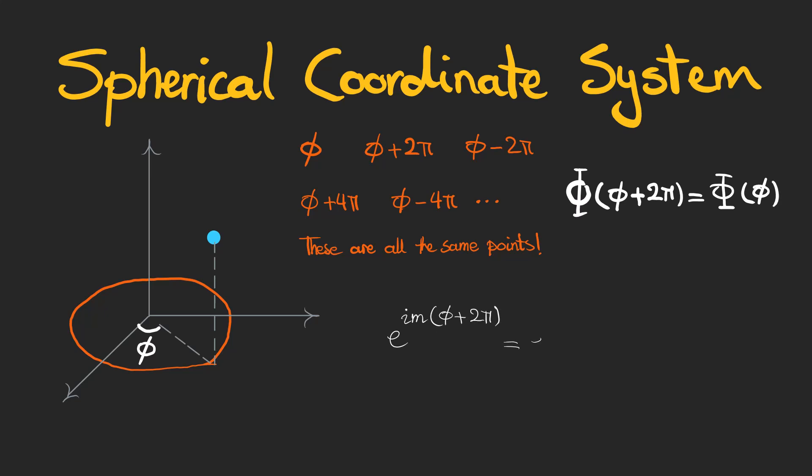So by using e to the power of i m phi in this expression, we get the allowed values for m which are all integers.